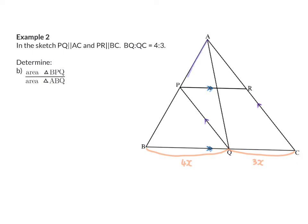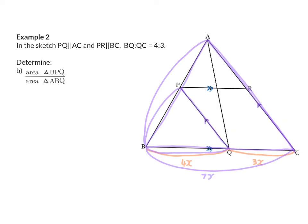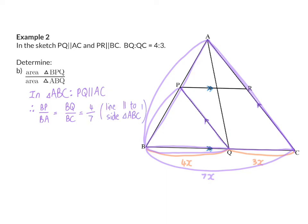For this, we're going to work in the big triangle ABC, because in that triangle we know that PQ is parallel to AC. So we can say that BP over BA equals BQ over BC, which is 4 over 7. My reason: line parallel to one side of the triangle.